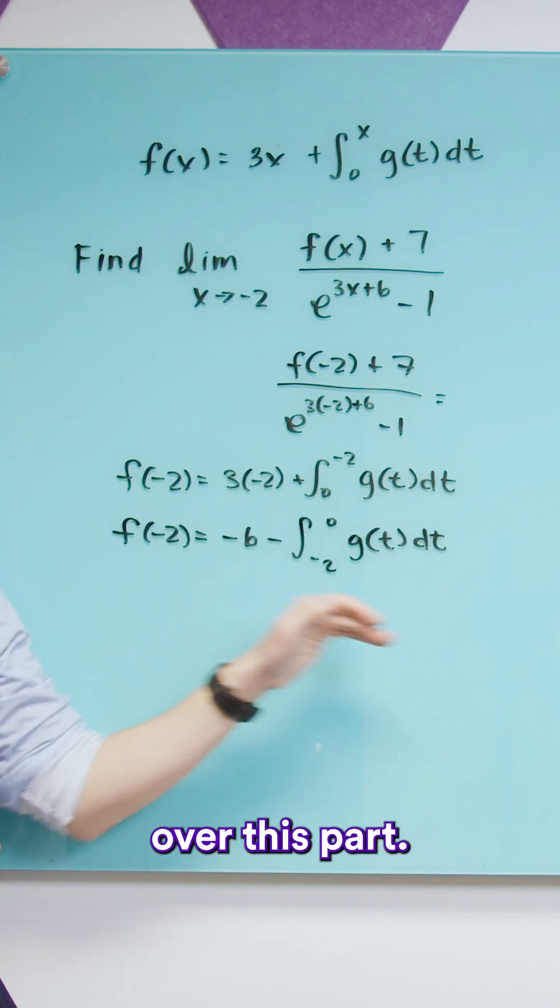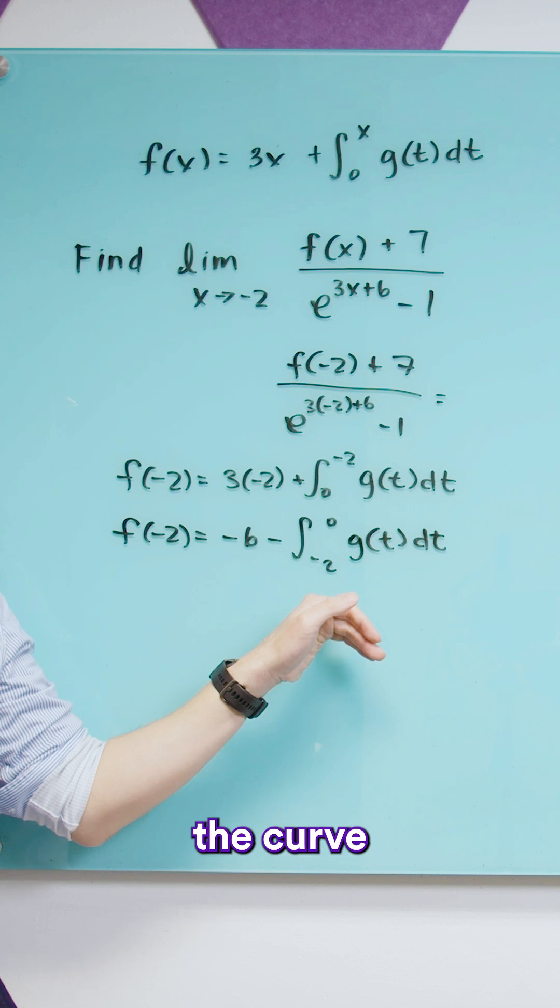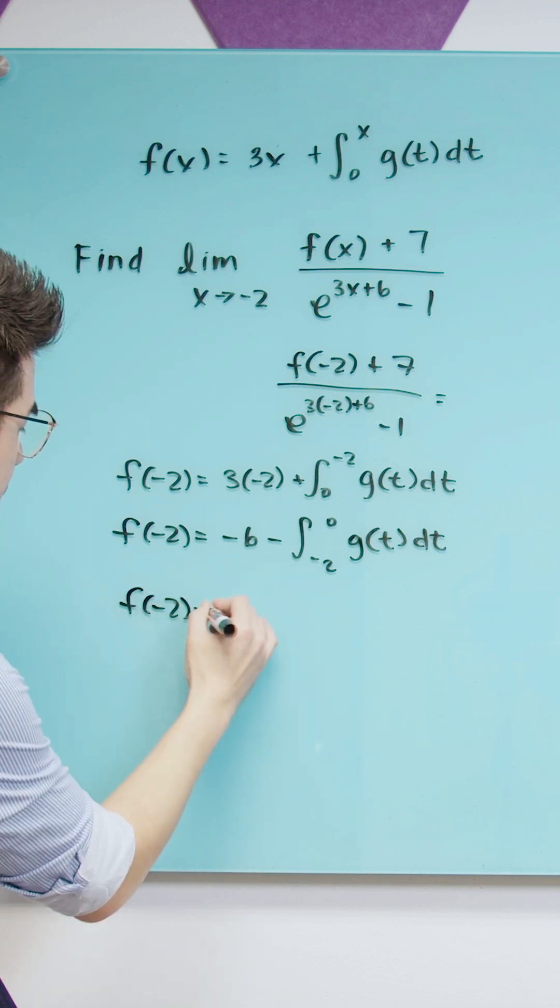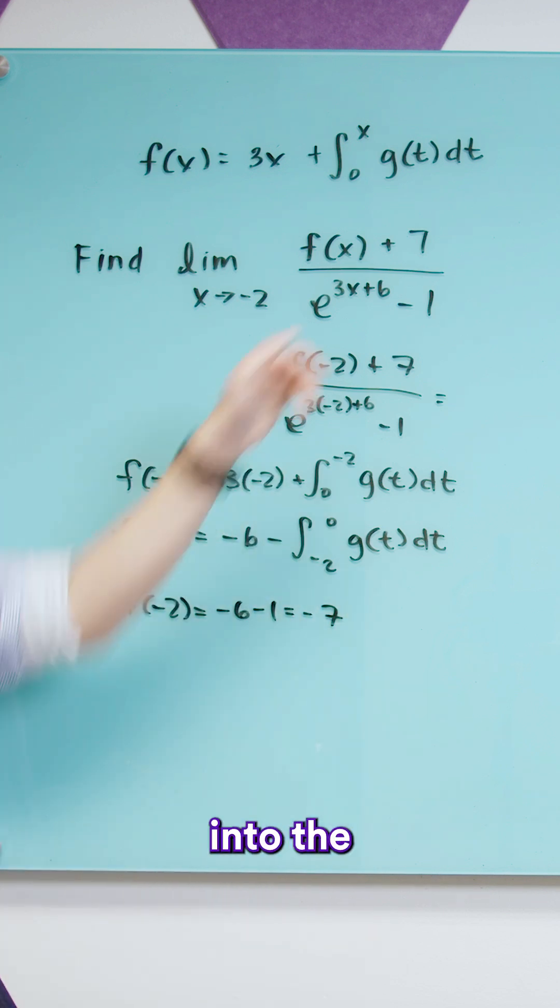So I'm going to skip over this part but this is just asking for the area under the curve and the area under the curve here was 1. I'm going to plug this all back into the original equation.